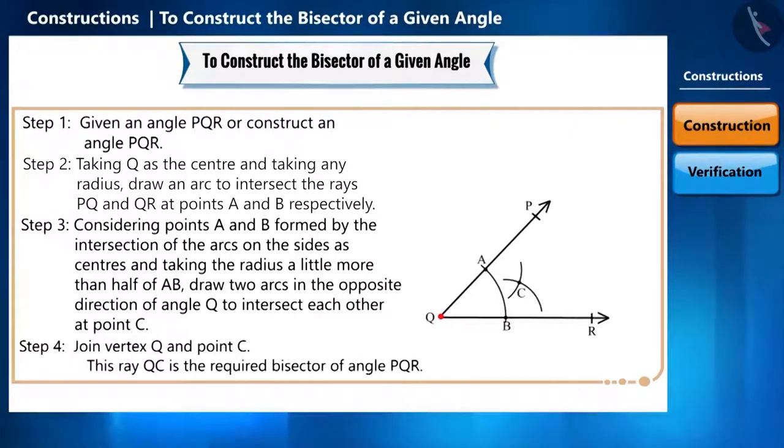Now, we will join vertex Q and point C. This ray is the required bisector of angle PQR. So, friends, in this way we have constructed the bisector of a given angle.